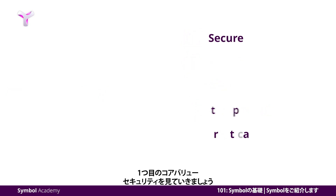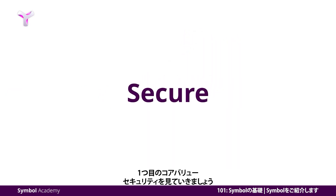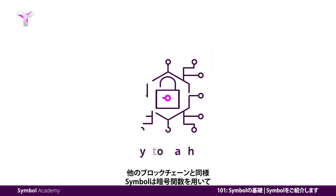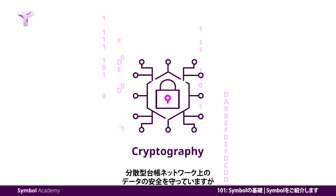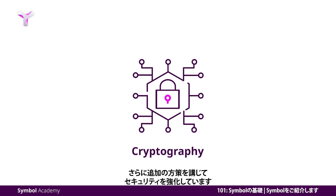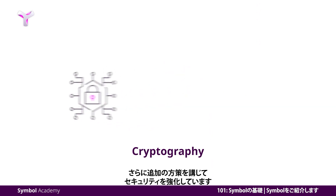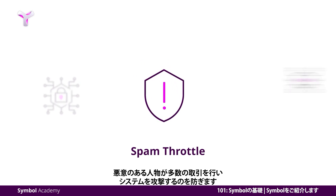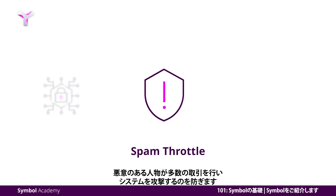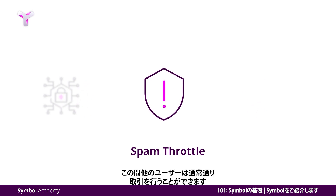The first core value is security. Like all blockchains, Symbol implements a cryptographic function to secure the data over the distributed ledger network, but Symbol bolsters its security using extra measures. First, it implements a spam throttle, which prevents malicious actors from attacking the system with loads of transactions while still letting honest actors successfully submit a transaction.